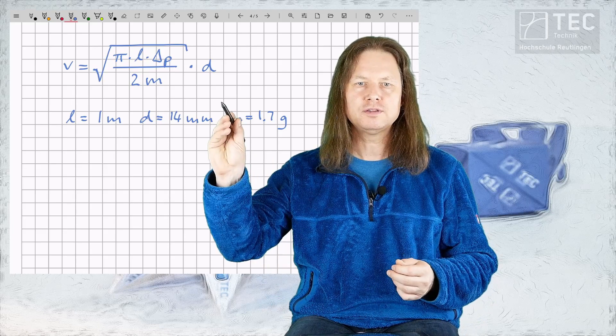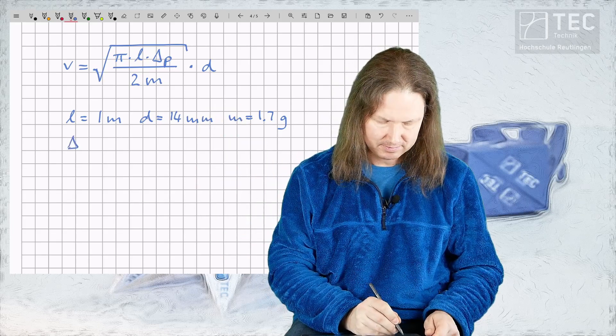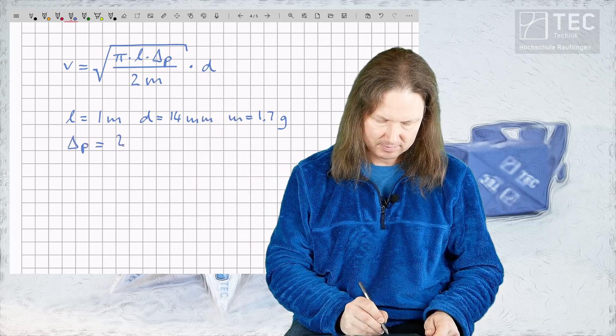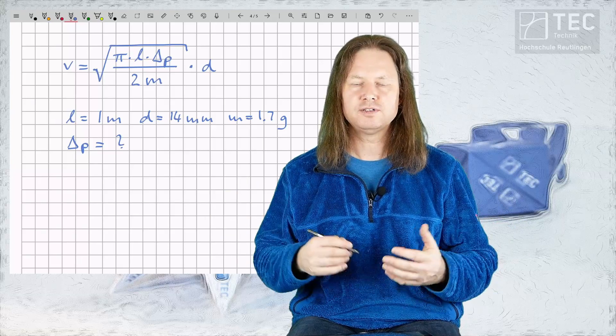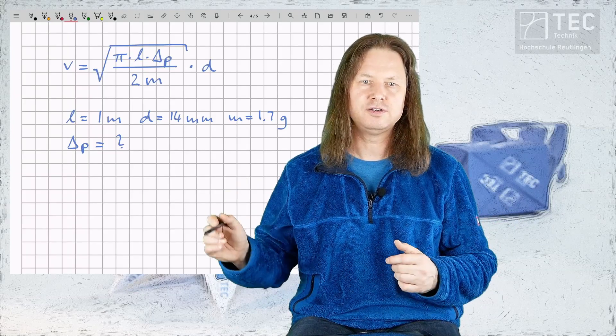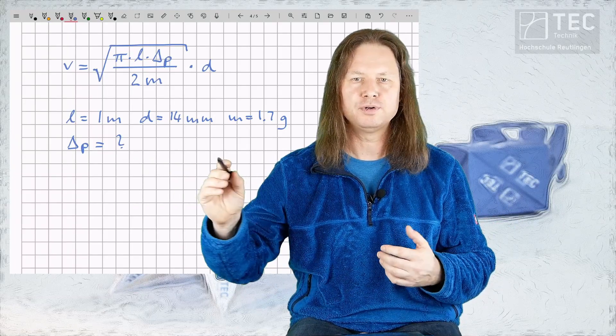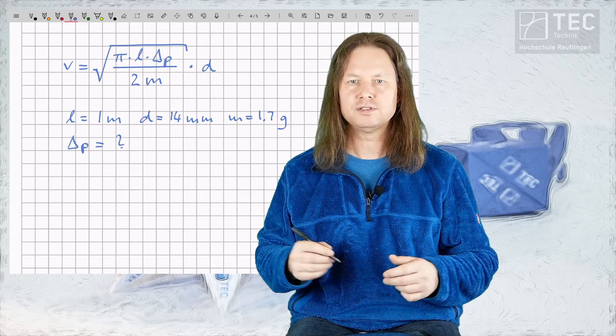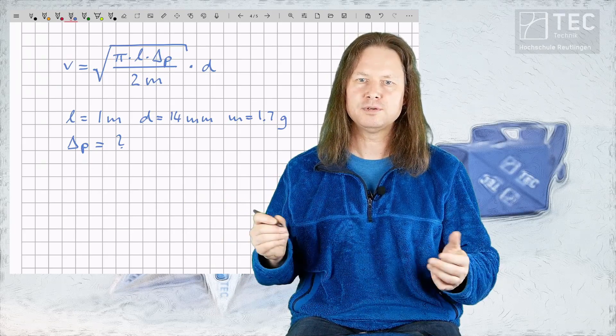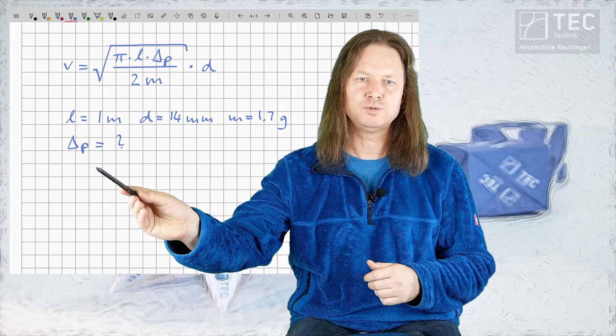But what about the differential pressure delta P? I'm unable to do this experiment myself. So in order to determine the pressure that I can put into the end of the tube I'll do some research on the internet to find possible data sources that give us a range of values we can use here.